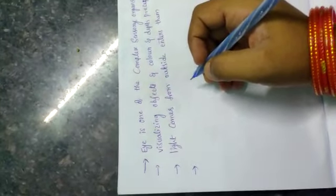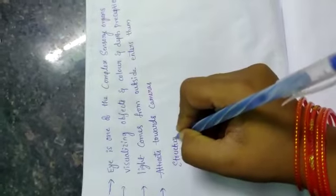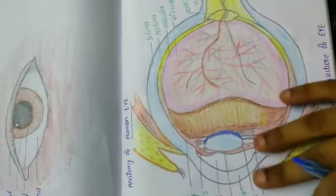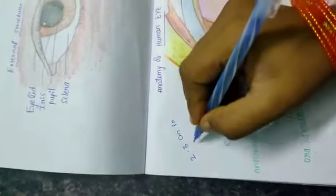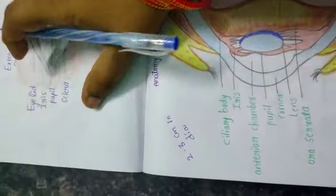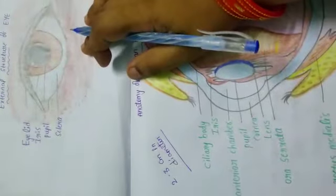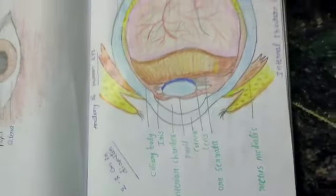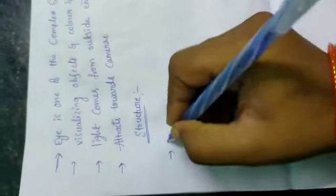A human eye is roughly 2.3 centimeters in diameter and is almost a spherical ball filled with some fluid. It consists of following parts.